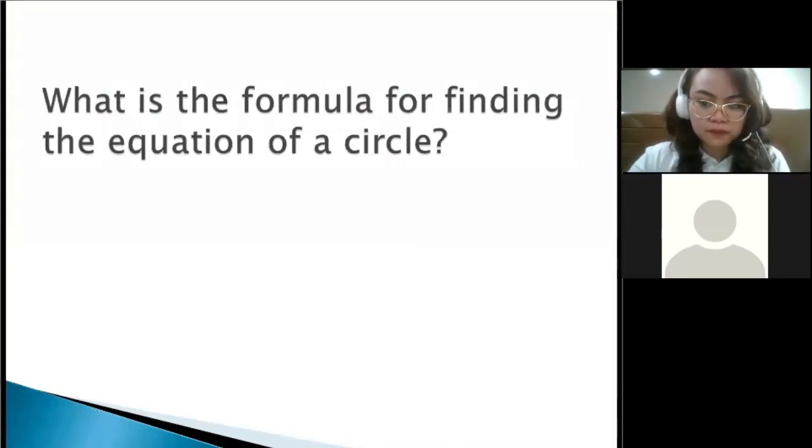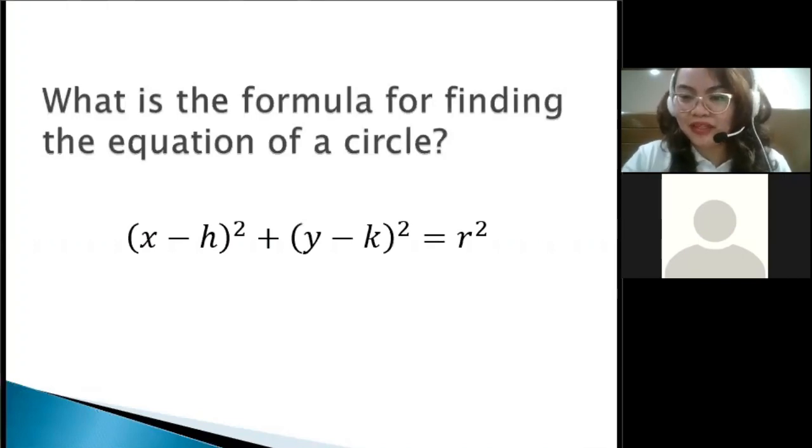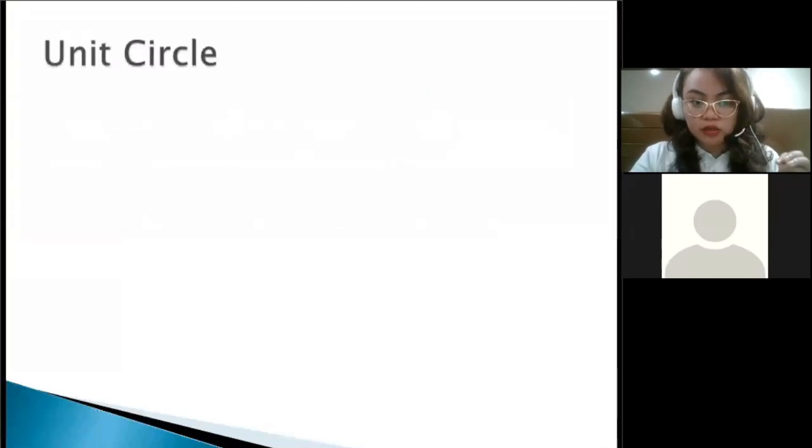Yes, Duane. Open close parenthesis x minus h squared plus y minus k, open close parenthesis y minus k squared equals r squared. Okay, very good. Formula for finding the equation of a circle. And through this, we will now identify the equation of the unit circle. The unit circle will be the basis of our trigonometric functions. Unlike when you were in junior high, your bases were the special triangles, right?